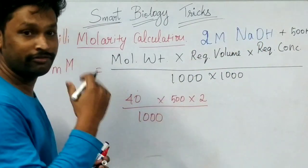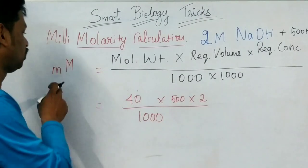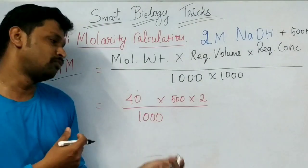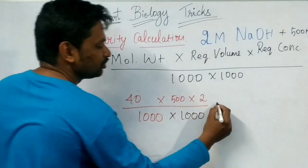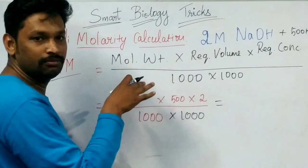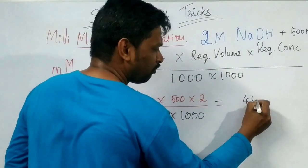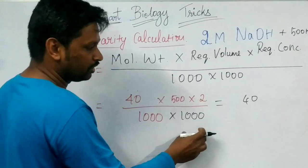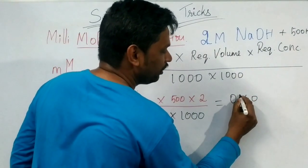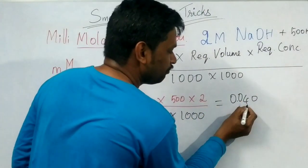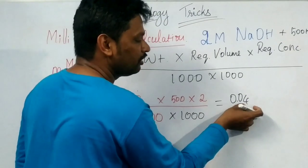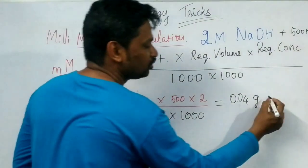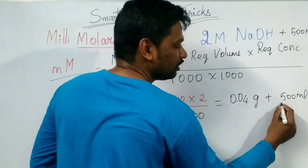Taking the same example — 2 millimolar sodium hydroxide for 500 ml. We have to prepare for millimolar, so a very fine amount we will get compared to molarity. We put another 1000 here. For the molarity calculation, we got 40. Now dividing by another 1000, we get 0.040 — so we use 0.04 grams of NaOH. Measure 0.04 grams of sodium hydroxide and dissolve with 500 ml of distilled water.